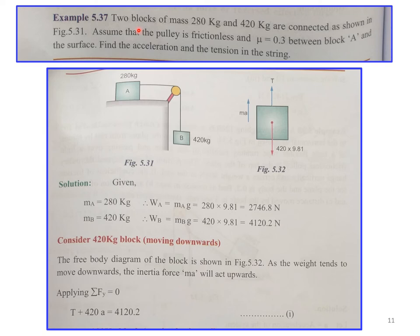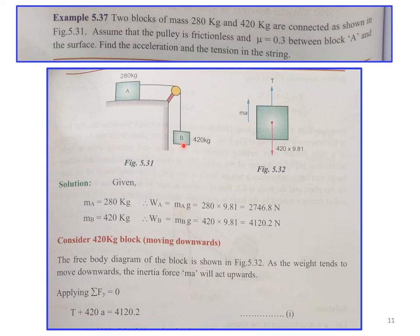Problem 2: Two blocks of mass 280 kg and 420 kg are connected as shown. The pulley is frictionless and μ = 0.3 between block A and the surface. Find the acceleration and tension in the string. Block A rests on a horizontal surface while block B hangs freely. Draw the free body diagram of each block separately.